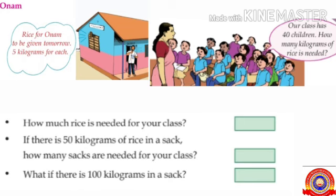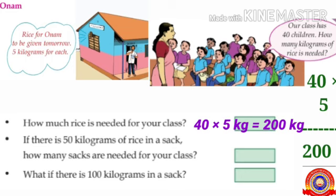How much rice is given for each child? Yes, 5 kilograms. So for one child, 5 kilograms of rice is needed. Then how much rice is needed for 40 children? Yes, 40 times 5 kilograms. That is, 40 into 5 kilograms equals 200 kilograms.